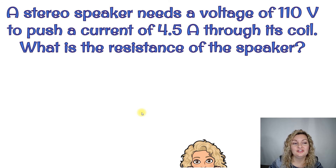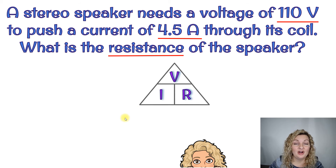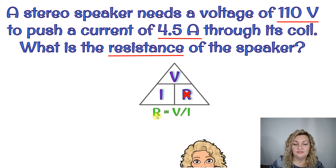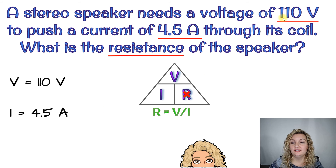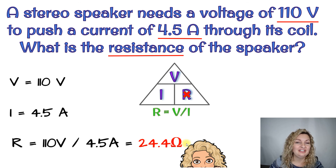A stereo speaker needs a voltage of 110 volts to push a current of 4.5 amps through its coil. What is the resistance of the speaker? We have 110 volts and 4.5 amps, and we're searching for resistance. Bring up your triangle and cross out that R, because that's what we're looking for — we're left with V over I. So R equals V divided by I. Voltage is 110 volts and current is 4.5 amps. R equals 110 divided by 4.5, which gives us 24.4. Remember that resistance is measured in ohms — you can write out ohms or use the upside-down horseshoe symbol.